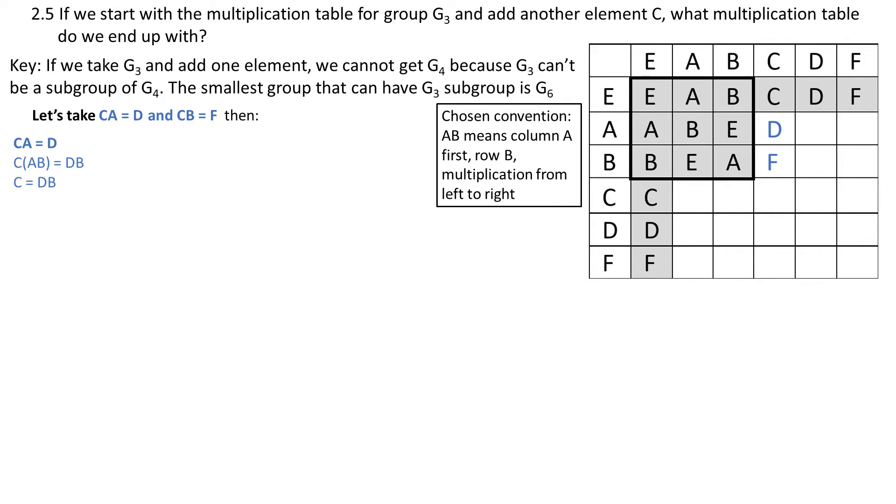So let's choose CA equals D and CB equals F. Let's look at CA equals D first. We can write multiply by B. Why? Because AB is equal to E, the identity element. And so C equals DB. We are just taking advantage of the fact that any group must obey the associative law. Now we are only one element away from solving the B row. We know that no two elements can repeat in any row or column. So FB must equal D. And then we do the same for the A row.